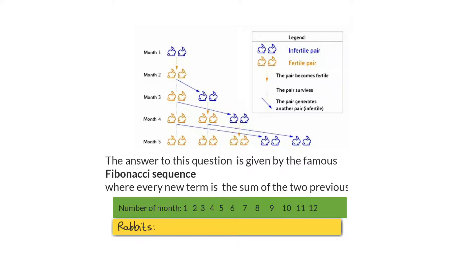In month one we had one pair. Month two we had one pair. Month three we had two pairs — one plus one makes two. Month four we had three pairs — one plus two makes three. Two plus three will make five, which corresponds with our diagram. Now you can carry on because you've seen the pattern: every two previous terms are added to get the next one.